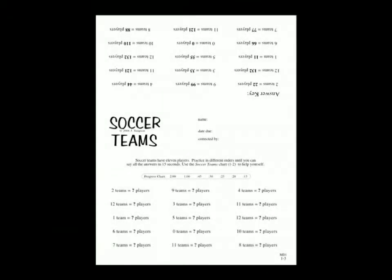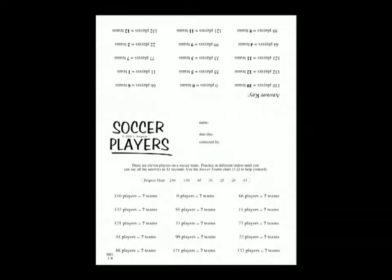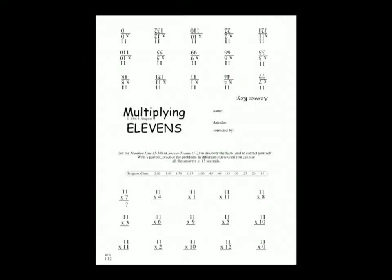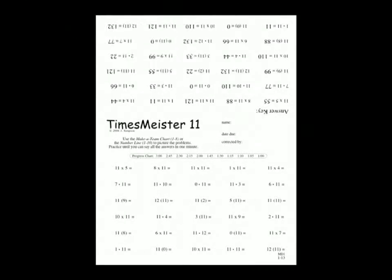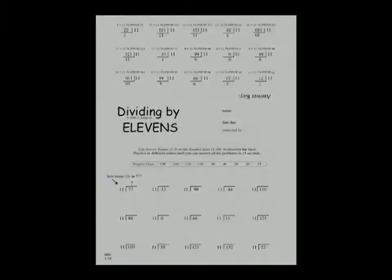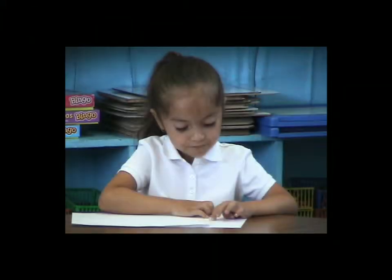We'll look at the soccer team's partner pages, exploring how to use them and have them serve as the model for how to work with the other folding pages in this book. The example will be for the classroom setting. With minor adjustments, you can use this in a tutoring or homeschool setting as well.